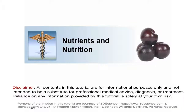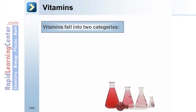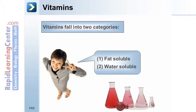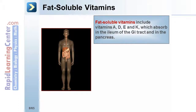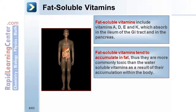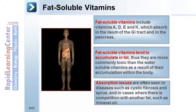Let's begin with a review of Essential Nutrients and Nutrition. Vitamins fall into two categories: fat-soluble and water-soluble. Fat-soluble vitamins include vitamins A, D, E, and K, which absorb in the ileum of the GI tract and in the pancreas. Fat-soluble vitamins tend to accumulate in fat, thus they are more commonly toxic than water-soluble vitamins. Absorption issues are often seen in diseases such as cystic fibrosis and sprue, and in cases where there is competition with another fat, such as mineral oil.